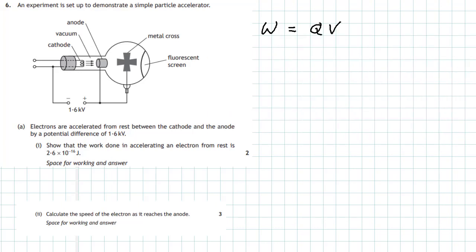Now we know the charge on the electron so we can put that in. The work done is going to be equal to 1.6 times 10 to the minus 19 multiplied by the potential difference, which is 1.6 times 10 to the power of 3 because it's kilovolts.